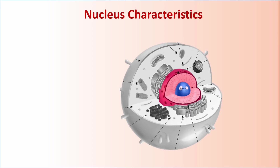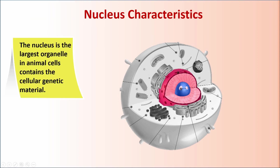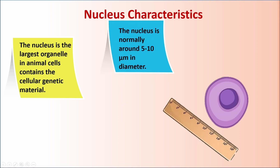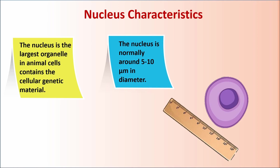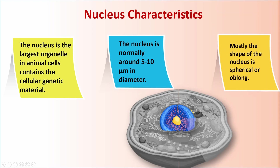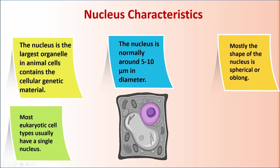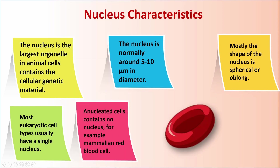Nucleus Characteristics. The nucleus is the largest organelle in animal cells and contains the cellular genetic material. The nucleus is normally around 5 to 10 micrometers in diameter. The shape of the nucleus is mostly spherical or oblong. Most eukaryotic cell types usually have a single nucleus. An anucleated cell contains no nucleus — for example, mammalian red blood cells.